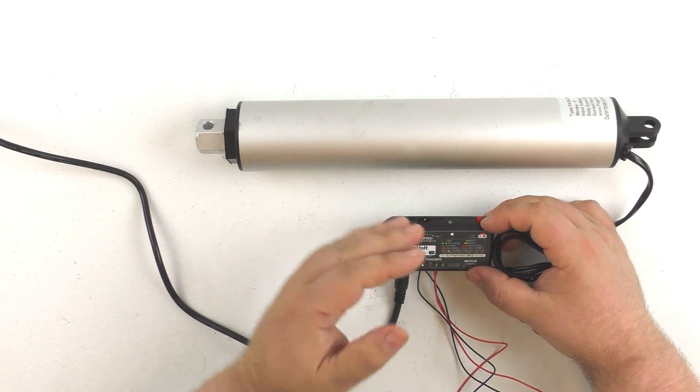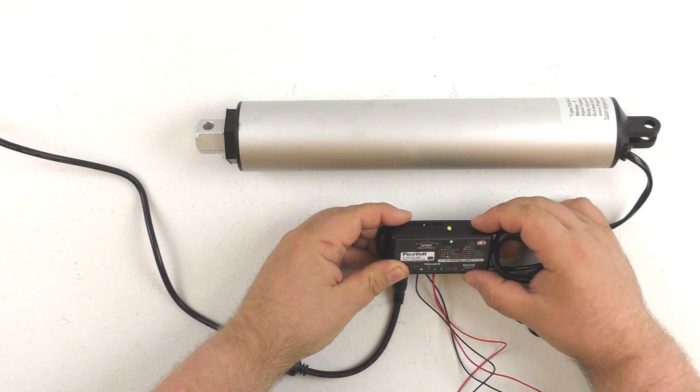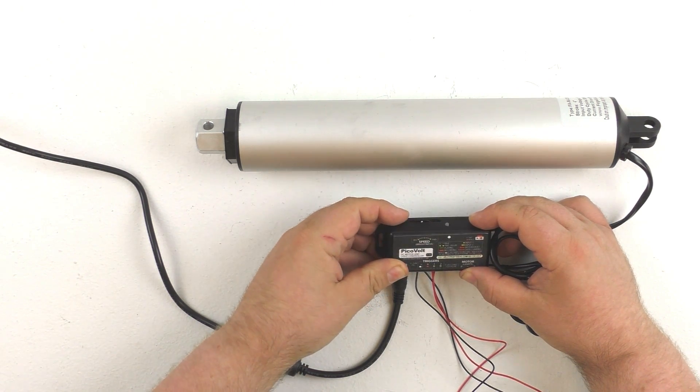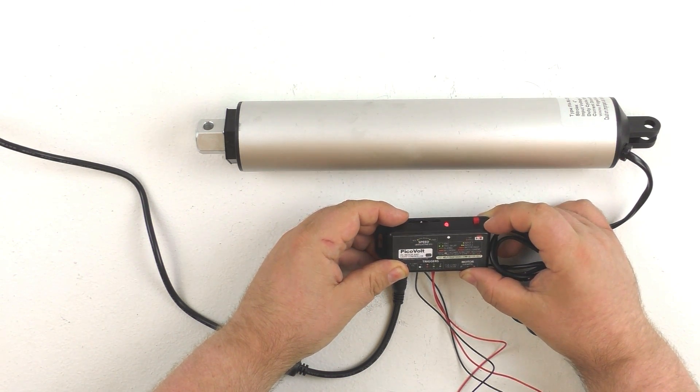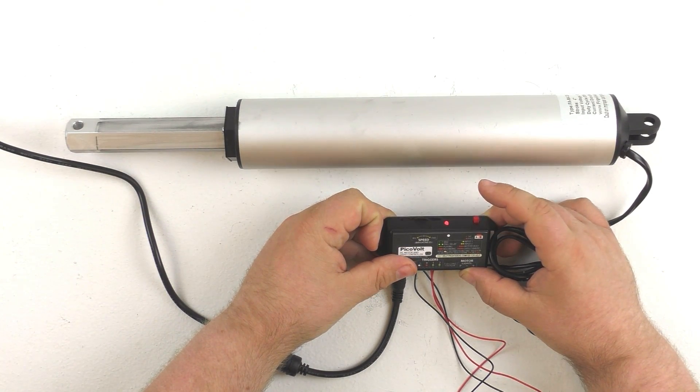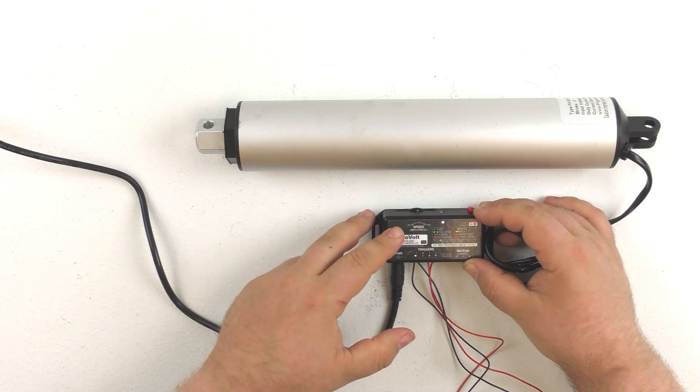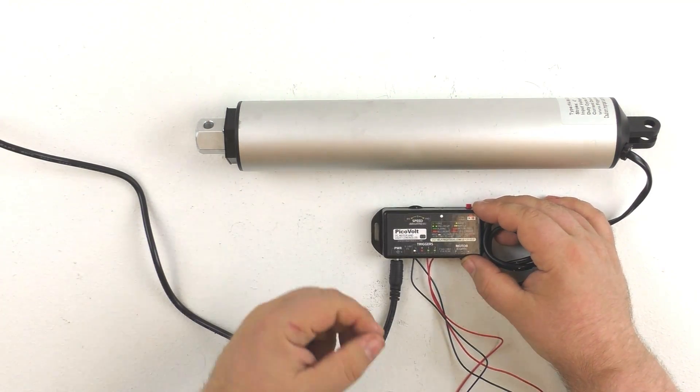So let's say for input one we want the cylinder to extend. All we do is we hold down record until the red LED starts flashing then we let go. Now we're in record mode we just extend the actuator and then tap record and the PicoVolt will store that animation as the animation for trigger input number one.